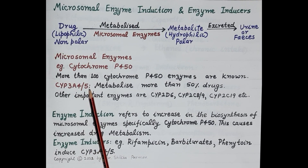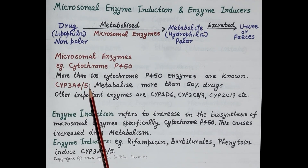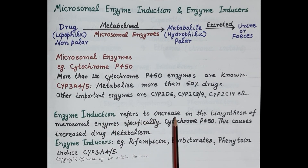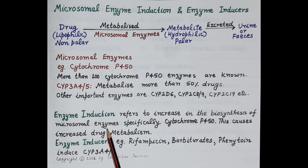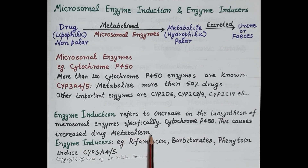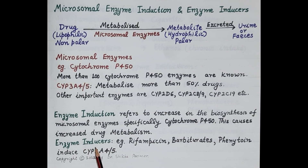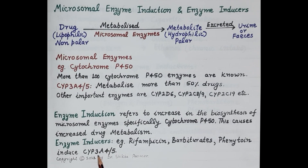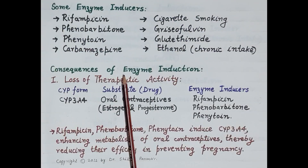Now let's understand enzyme induction. Enzyme induction refers to an increase in the biosynthesis of microsomal enzymes, specifically cytochrome P450 enzymes, and increased synthesis of these enzymes causes increased drug metabolism. Enzyme inducers are the agents that increase synthesis of microsomal cytochrome P450 enzymes — for example, drugs like rifampicin, barbiturates, and phenytoin, which induce synthesis of cytochrome 3A4 and cytochrome 3A5 microsomal enzymes.